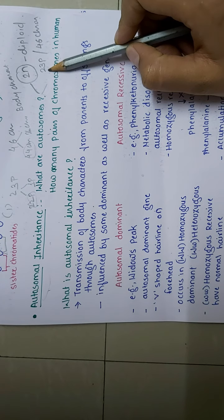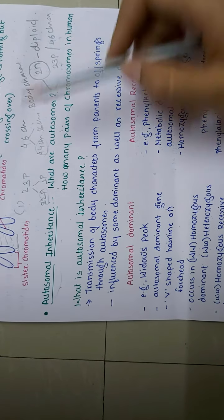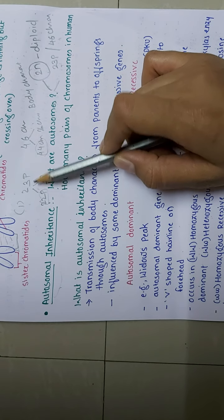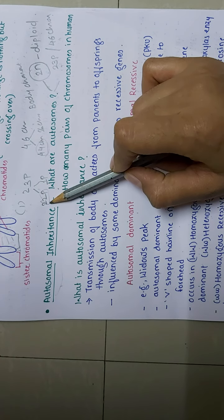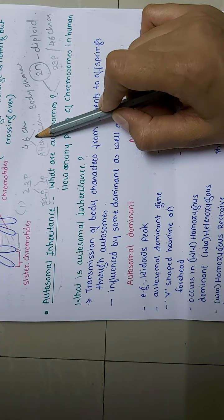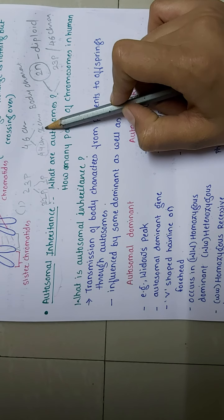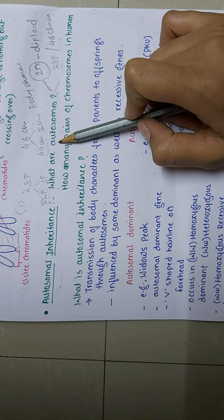So 23 pairs are there and in terms of chromosomes, 46 chromosomes are there. In the 23 pairs, 22 are autosomes and one pair is the sex chromosome. If we talk in terms of chromosomes, out of 46, 44 are the autosomes and two are the sex chromosomes. Autosomes are those which do not take part in sex determination — they are not sex chromosomes.